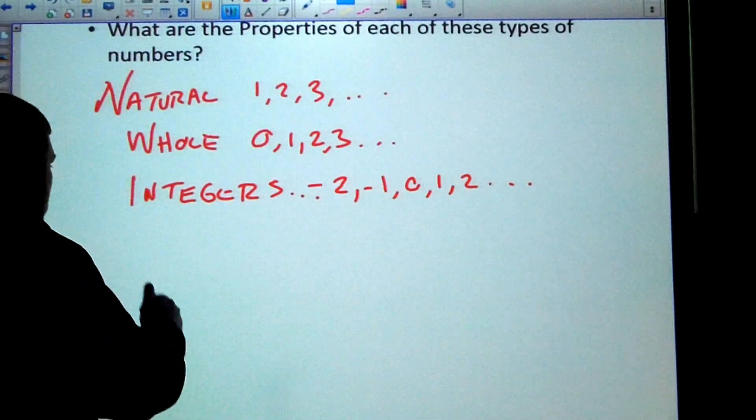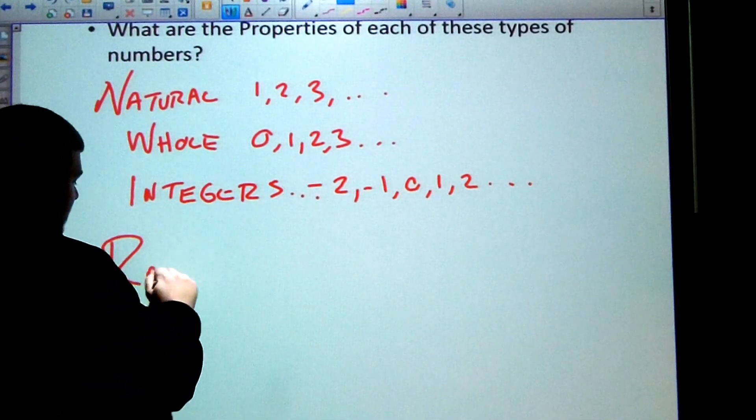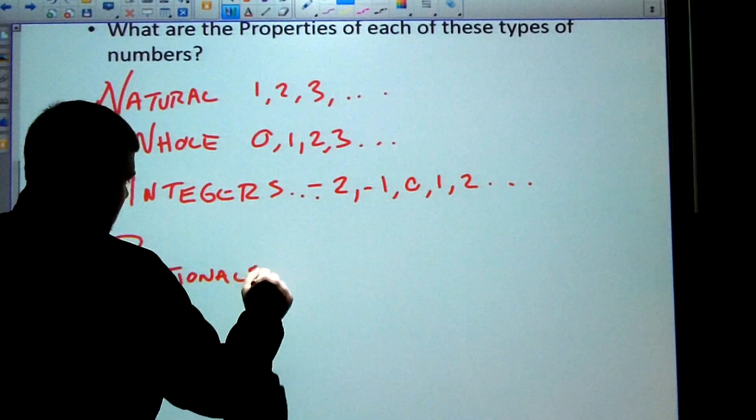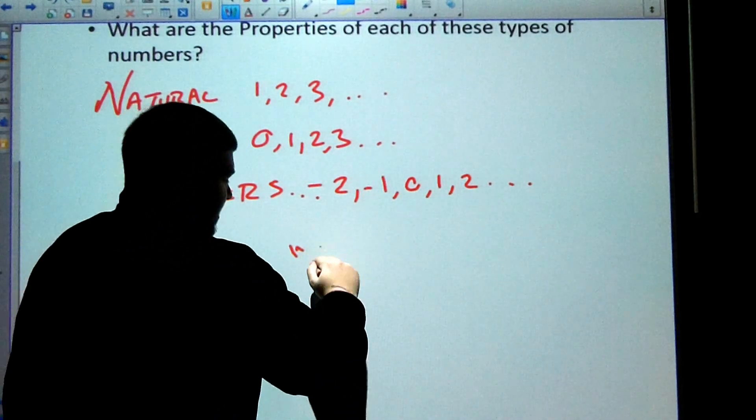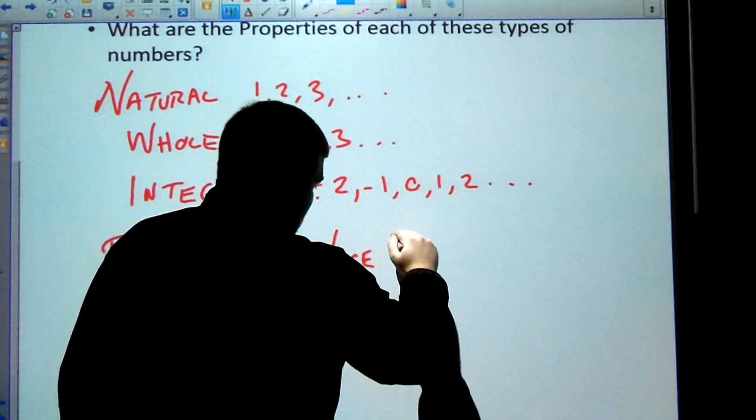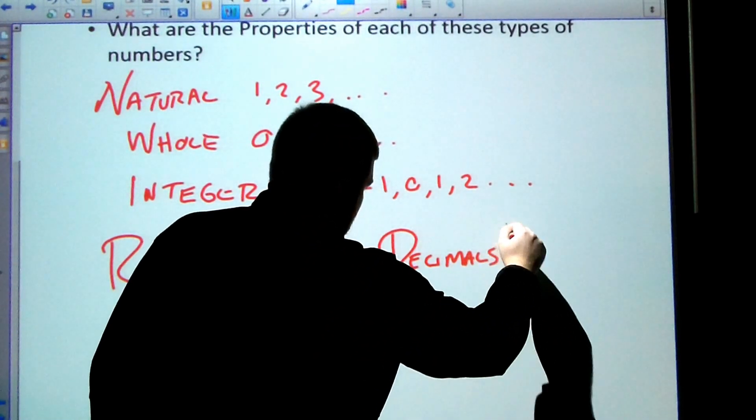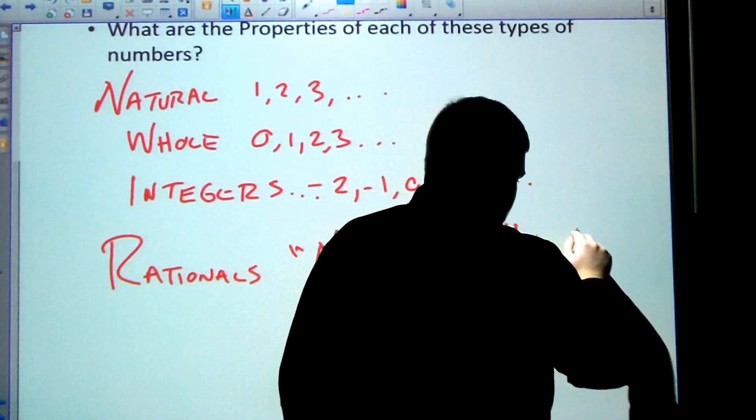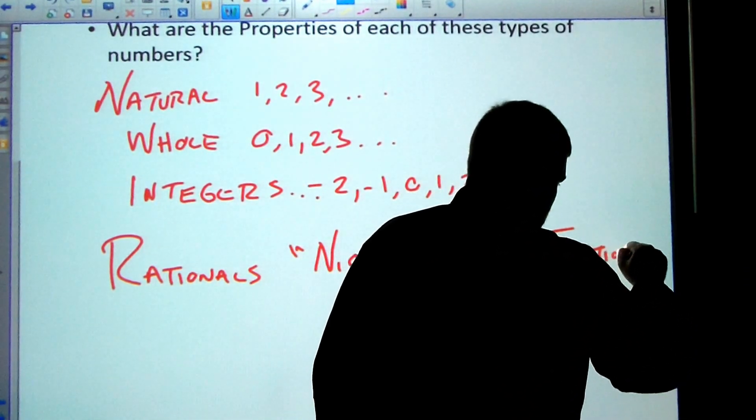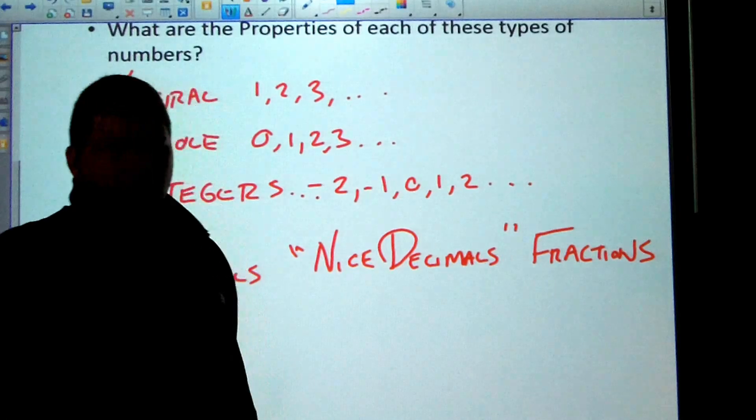I just think of rationals as being numbers you can write as a fraction. So rationals, we're going to call it nice decimals and also fractions.